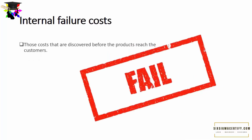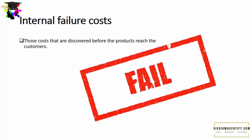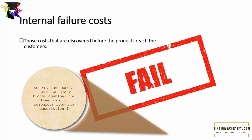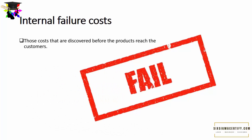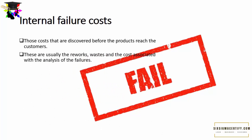Internal failure costs are those costs that are discovered before the products reach the customers. These costs may be discovered at the time of production, during providing any services, or even after the product is made but still inside the warehouse of the factory. They can be returned to the factory for rework or rechecking quality, and they typically involve rework, waste, and costs associated with analysis of the failures.